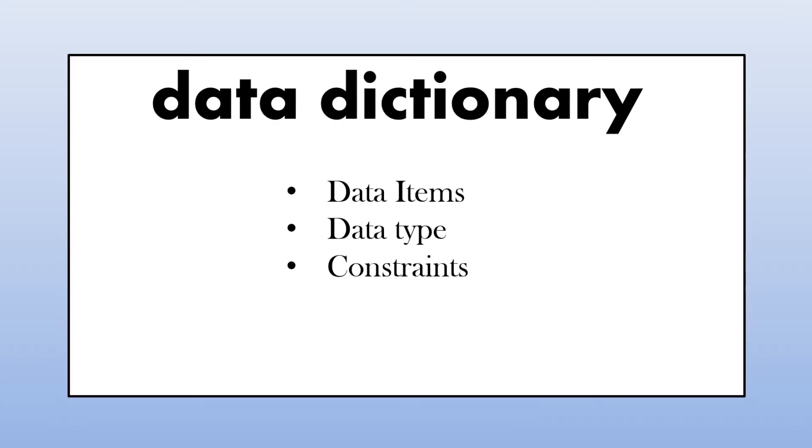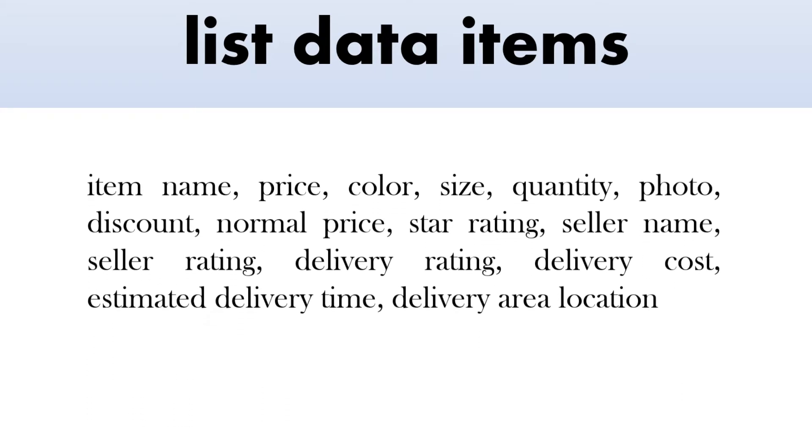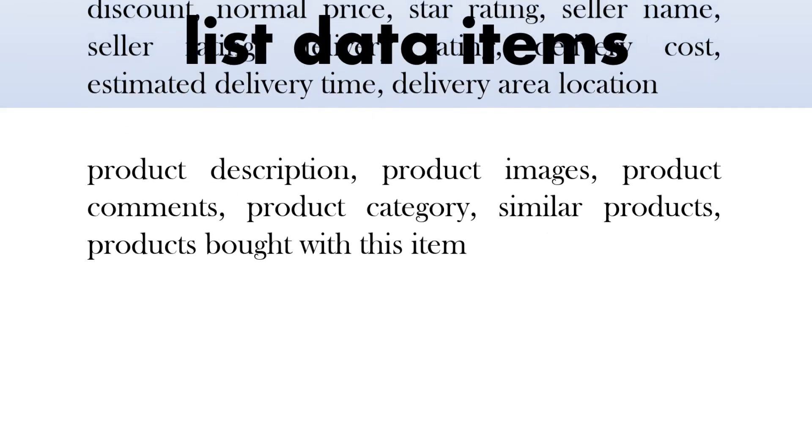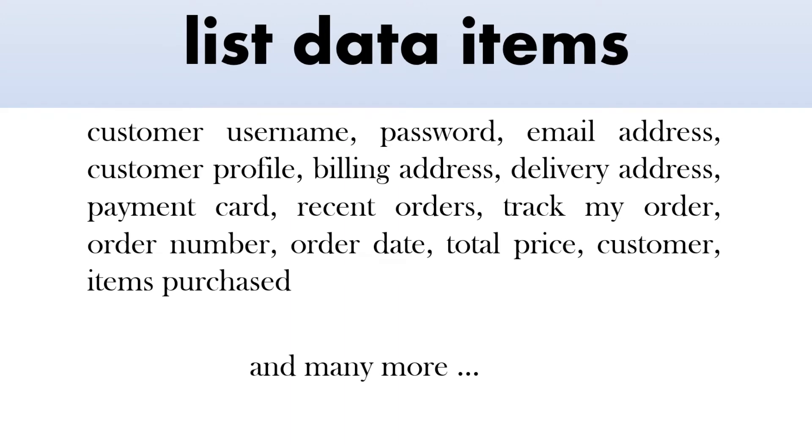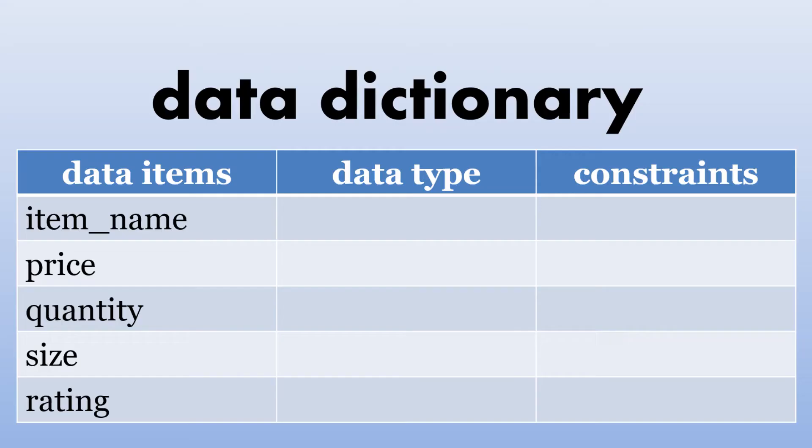In a data dictionary, we can look at the data items, data type, and constraints. So what does that mean? Well, let's start off with a list of data items. There's quite a lot - things about the items, the products, the customer, delivery, the order, and more. So let's start off with just a few: item name, price, quantity, size, and rating.